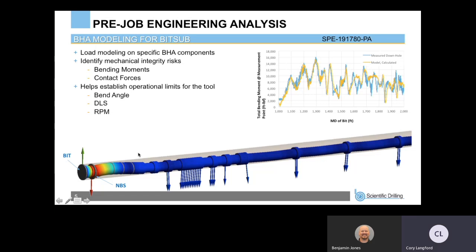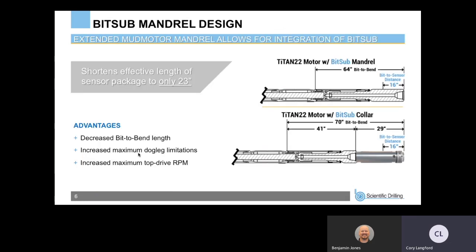We still have a pin connection below the motor, which does limit us on bend angle and dogleg severity. Through the two years we've had the tool out, a lot of the requests from our customers were to eliminate that connection. So we have a new setup for the tool — an extended mud motor mandrel — and we're actually able to fit the sensors of the bit sub within that extended mandrel. Not only does it eliminate that pin connection, but it also increases maximum dogleg limitations and maximum top-drive RPM.